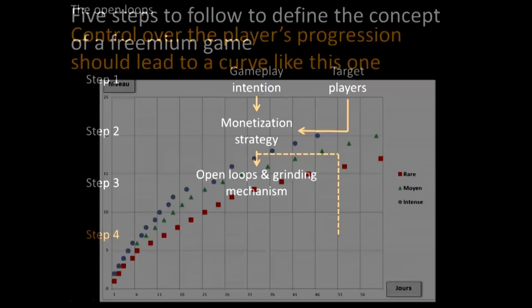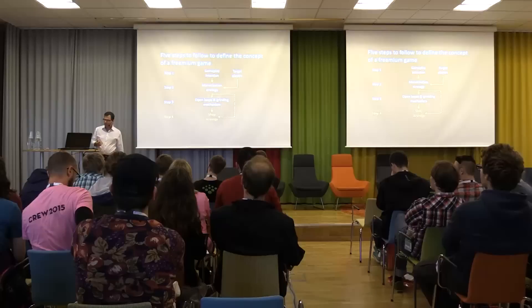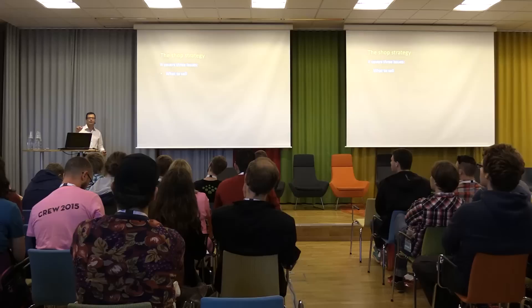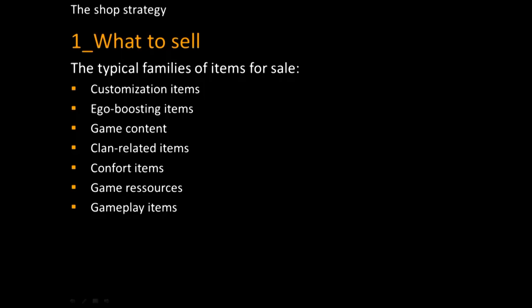The fourth step is the shop strategy. It covers three different issues: what to sell, how to sell it, and at what price. For what to sell, there are lots of families of items. You always find the same kind of items in many games — like cosmetics, energy points, and so on — but very often games bring new items specific to their gameplay, which is interesting. Don't limit yourself to traditional items. Open up your mind and try to find new ones related to your own game.